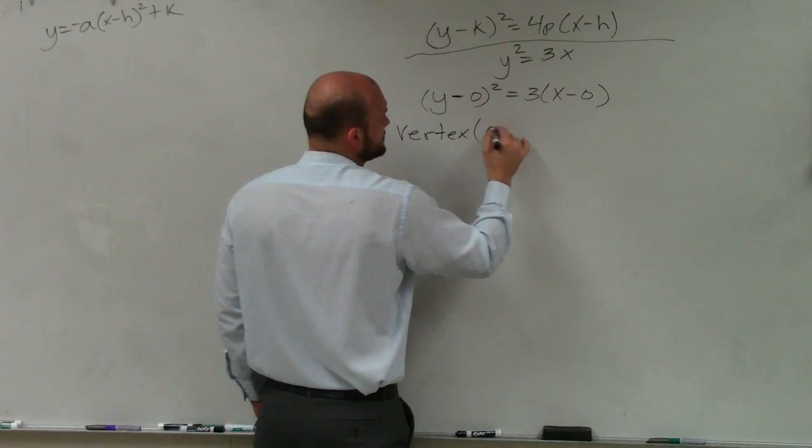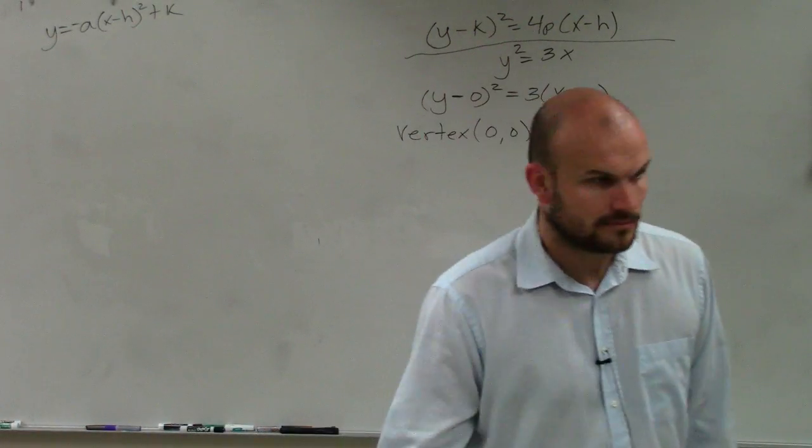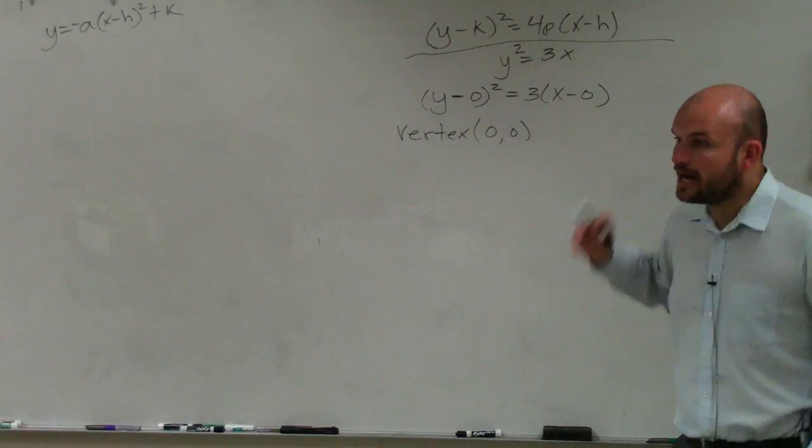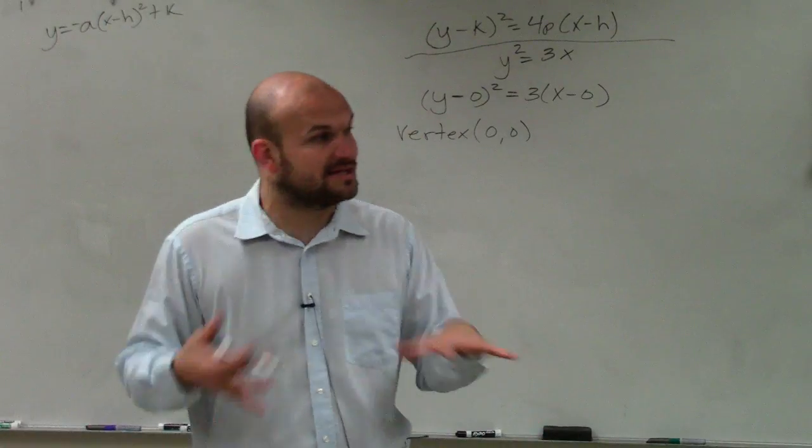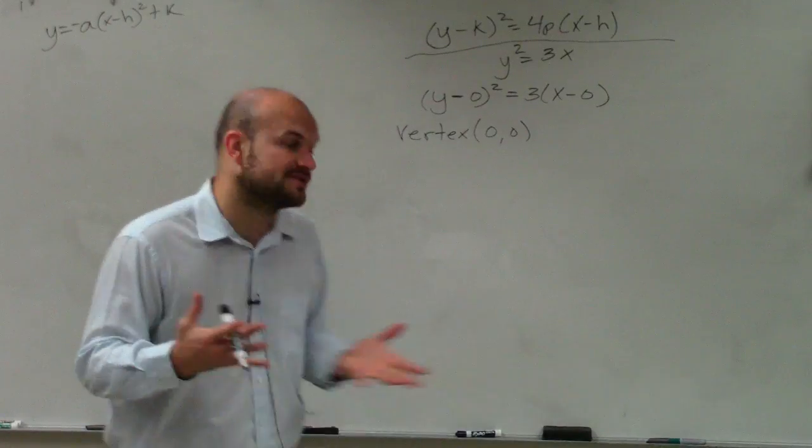So therefore, does it make sense for me to be able to say that my vertex is that 0 comma 0? Yeah, right? Those are my h and my k. Now the next thing is I want to find the p value. If I can determine what the p value is, I can determine does the graph go left and right, as well as I can determine where is going to be my focus and where is my directrix.